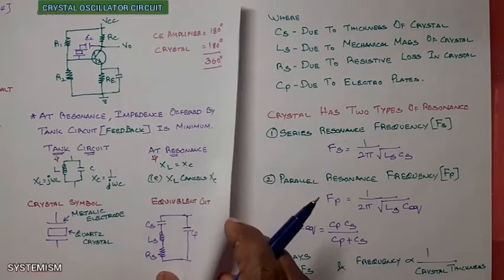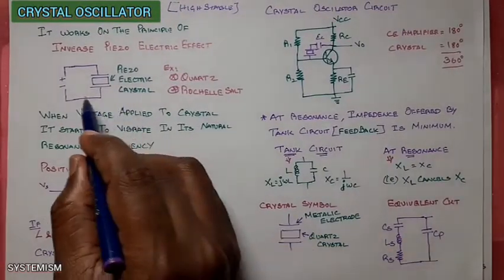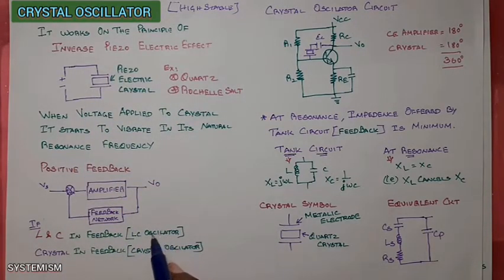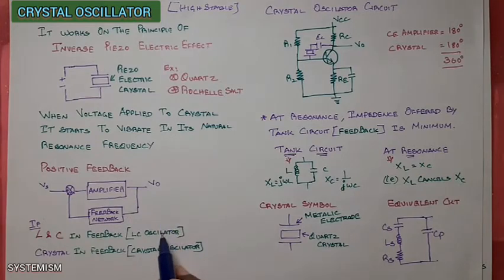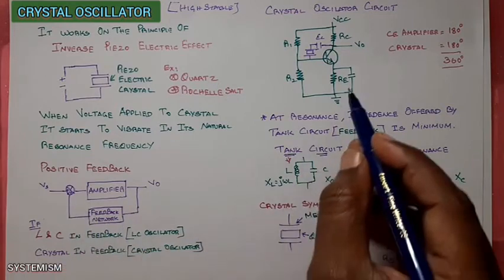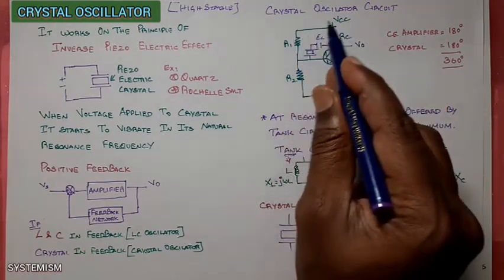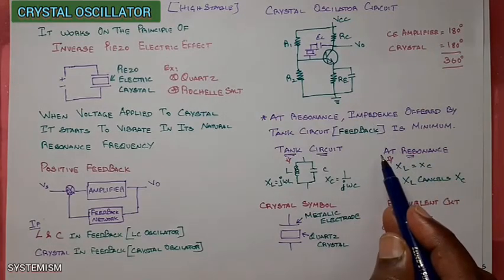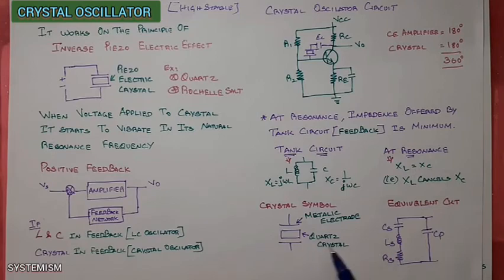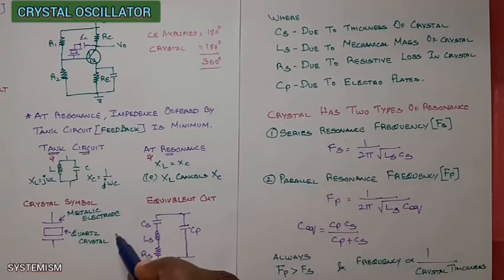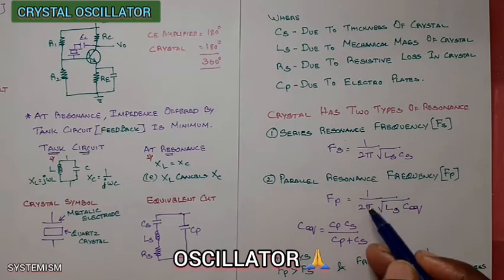In this video, we learnt about what is a crystal oscillator and the principle of crystal oscillator operation. The crystal has its own natural resonance, whereas in an LC oscillator we create L and C components to generate the resonance frequency — so the crystal oscillator is more stable compared to LC oscillator. A normal amplifier with feedback is called an oscillator; here we drew a normal amplifier and connected a crystal in the feedback, which is why it is called a crystal oscillator. We learnt how a particular frequency resonance is created, the equivalent circuit of the crystal, and two types of resonance in the crystal oscillator, along with the formula for frequency at resonance.